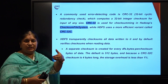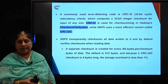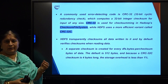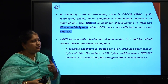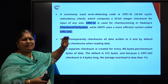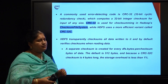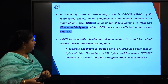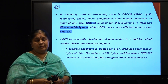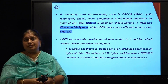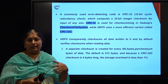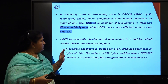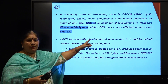When working with HDFS, it commonly uses CRC-32 — cyclic redundancy check, which is a 32-bit or 4-byte value. This computes a 32-bit integer checksum for an input of any size. Sometimes HDFS uses a more efficient variant called CRC-32C. HDFS calculates all these checksums transparently, without any knowledge to the user — the user does not feel the extra work of calculating and storing all these things.